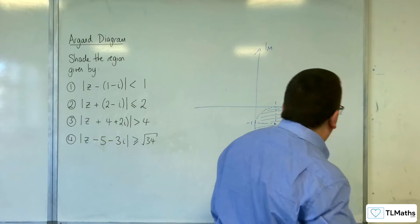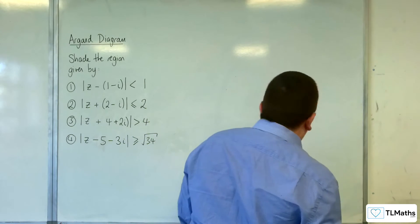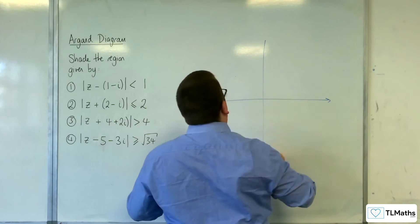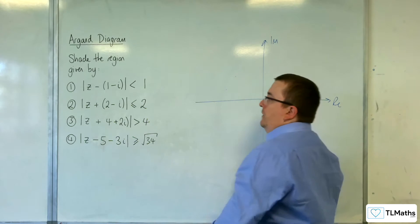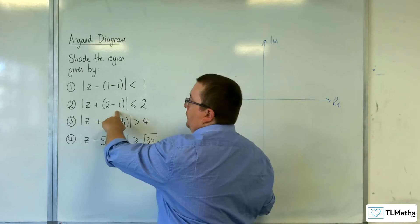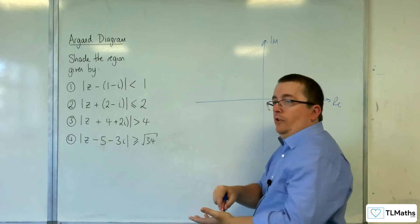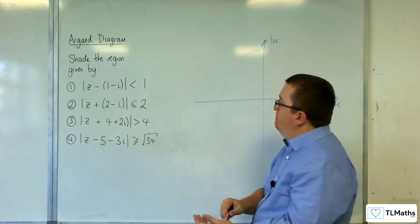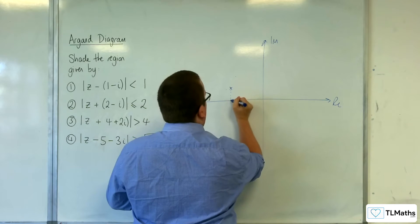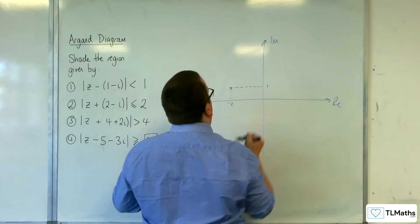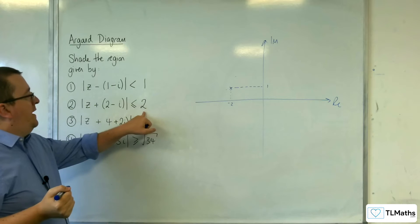Let's have a look at the next one. So real and imaginary. So this time we've got z plus 2 take away i, which means that it's going to have to be centred at minus 2 plus i. So minus 2 plus i, something like this. And it's got a radius of 2.